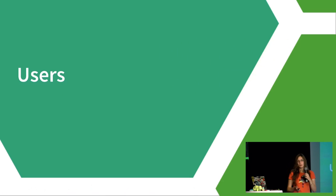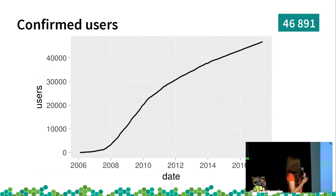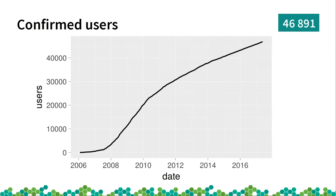Let's talk about some more interesting data — users. We have 46,891 users, and here is how it looks over time. We can see that over this period there were more users at certain points.